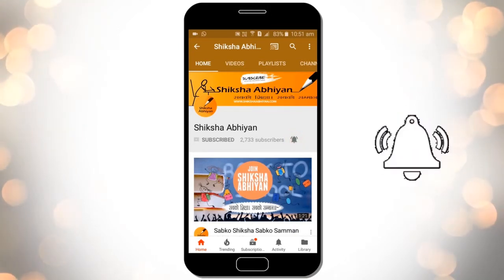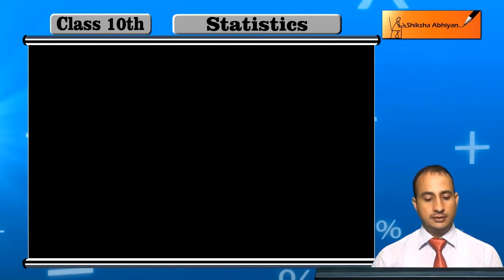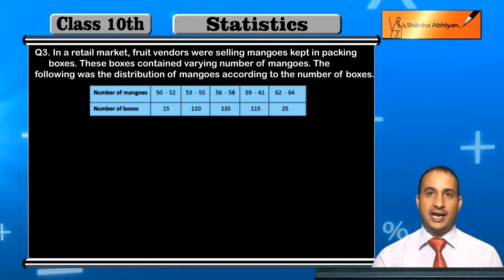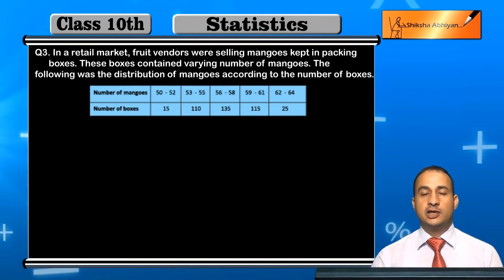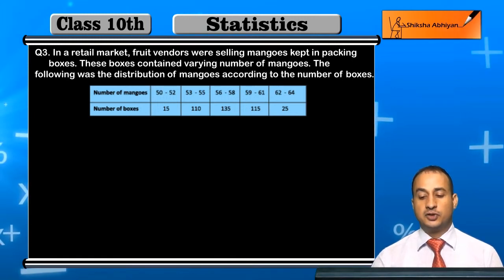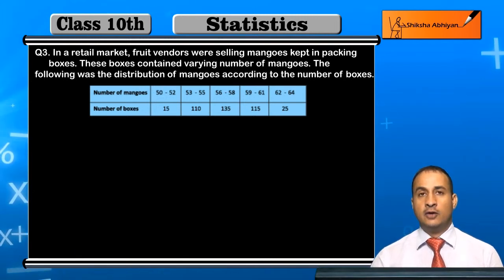Now students, see the third question. In a retail market, fruit vendors were selling mangoes kept in packing boxes. These boxes contain a varying number of mangoes, and the following was the distribution of mangoes according to the number of boxes.